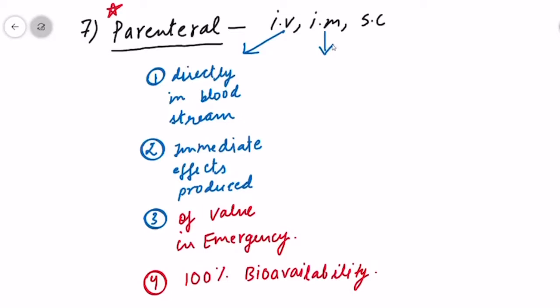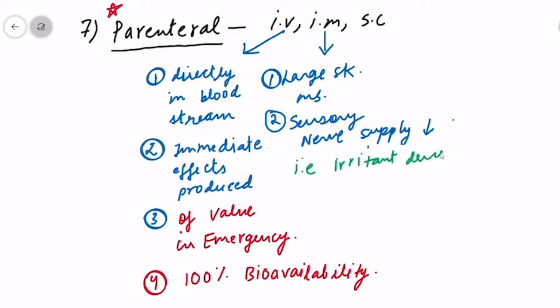But this route is very important in case of emergency. Next is intramuscular administration. In this, the drug is injected directly into a large skeletal muscle, for example gluteus maximus (the hip muscle), deltoid, tricep, or femur muscles. The muscles have more vascularity, so absorption of the drug increases. Muscles have less rich supply of nerves, so mildly irritant drugs can be administered.